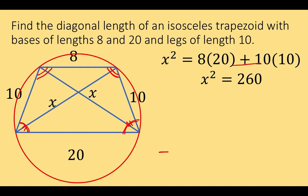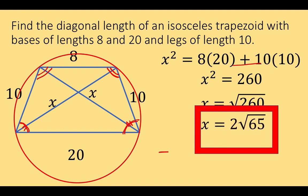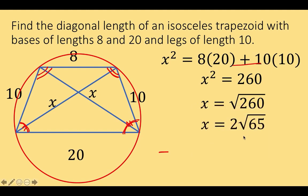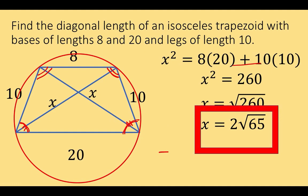Extracting the square root of both sides, we arrive at x equals the principal square root of 260, which gives us x equals 2 square root of 65. We take the principal square root because the length of the diagonal cannot be negative. So our final answer, applying Ptolemy's theorem, is x equals 2 square root of 65.